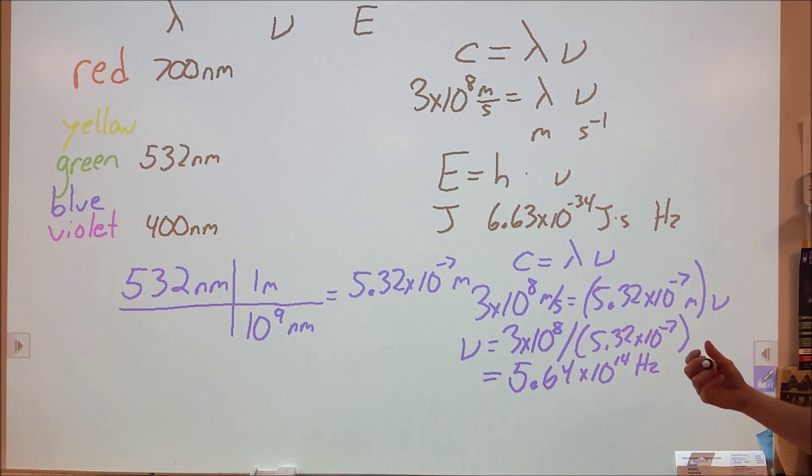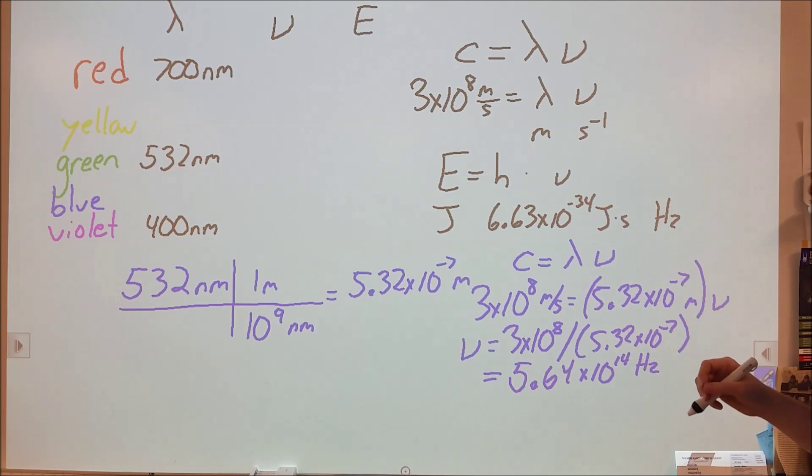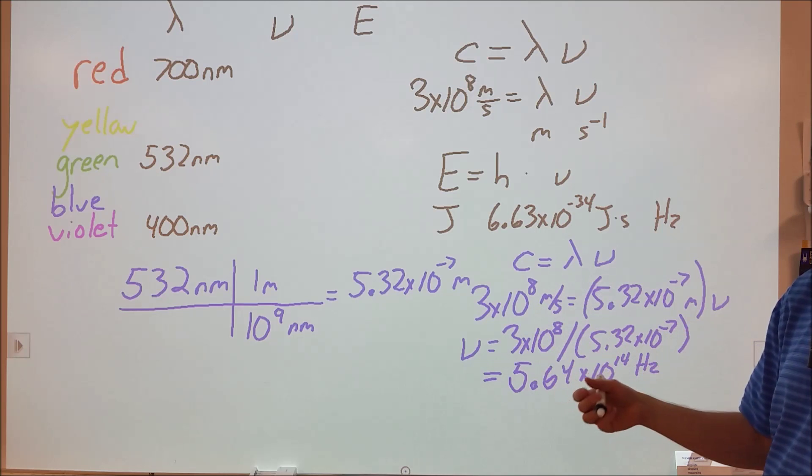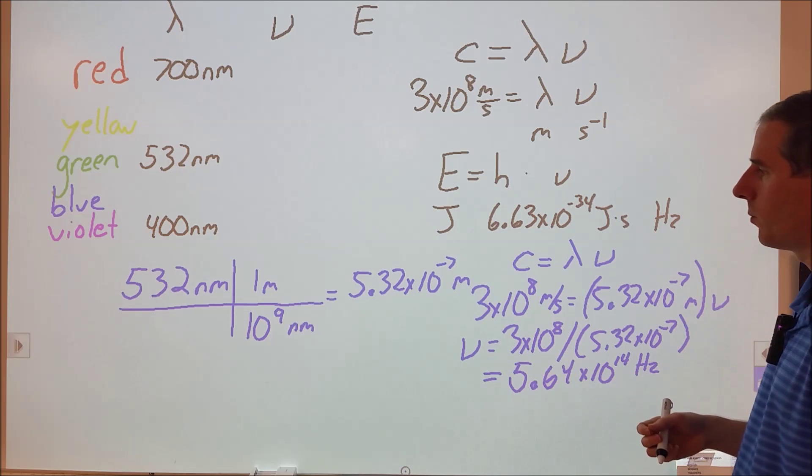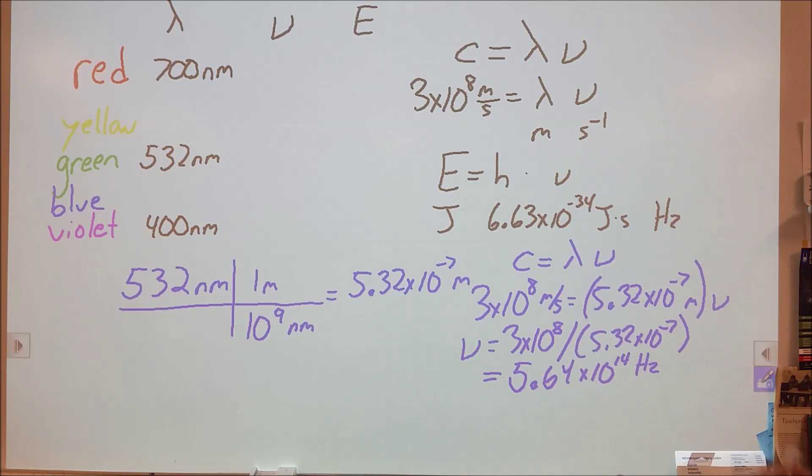Let's put those numbers into some idea. 5.32 times 10 to the negative 7th is smaller than the width of a piece of hair. We're looking at half a micrometer, so a little less in thickness than one single hair. Very, very short wavelength.